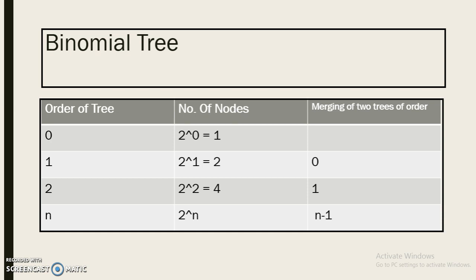Another important property of binomial tree is that we can get a tree of order n by merging two trees of order n minus 1. Thus a tree of degree 0 is just one node.